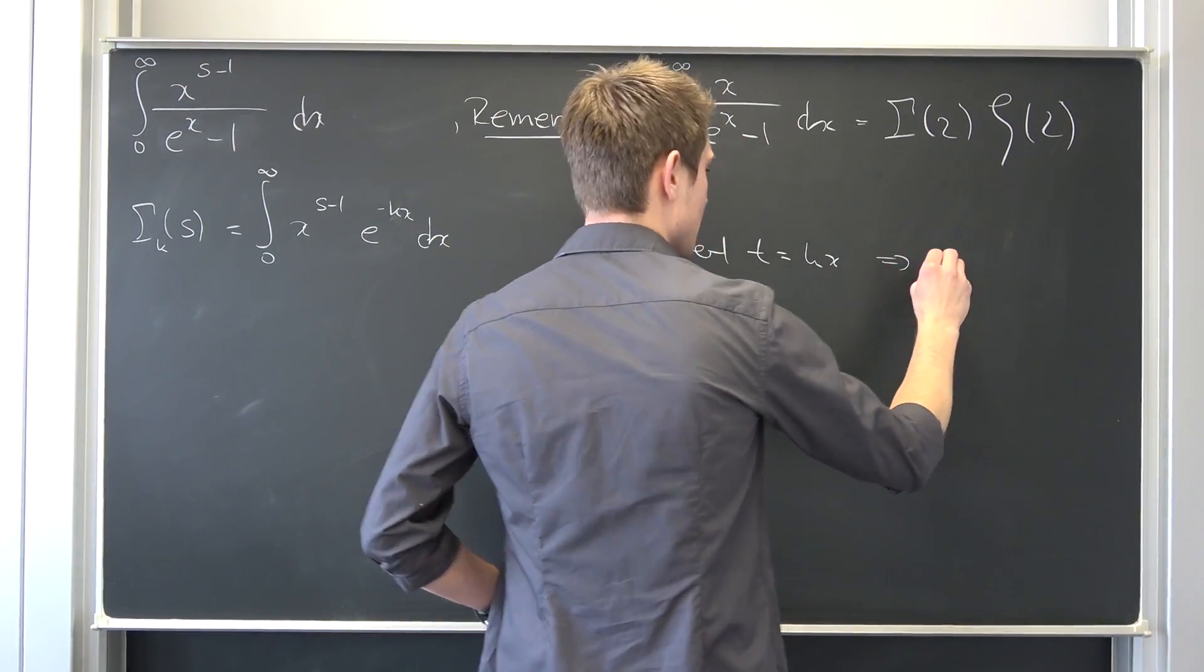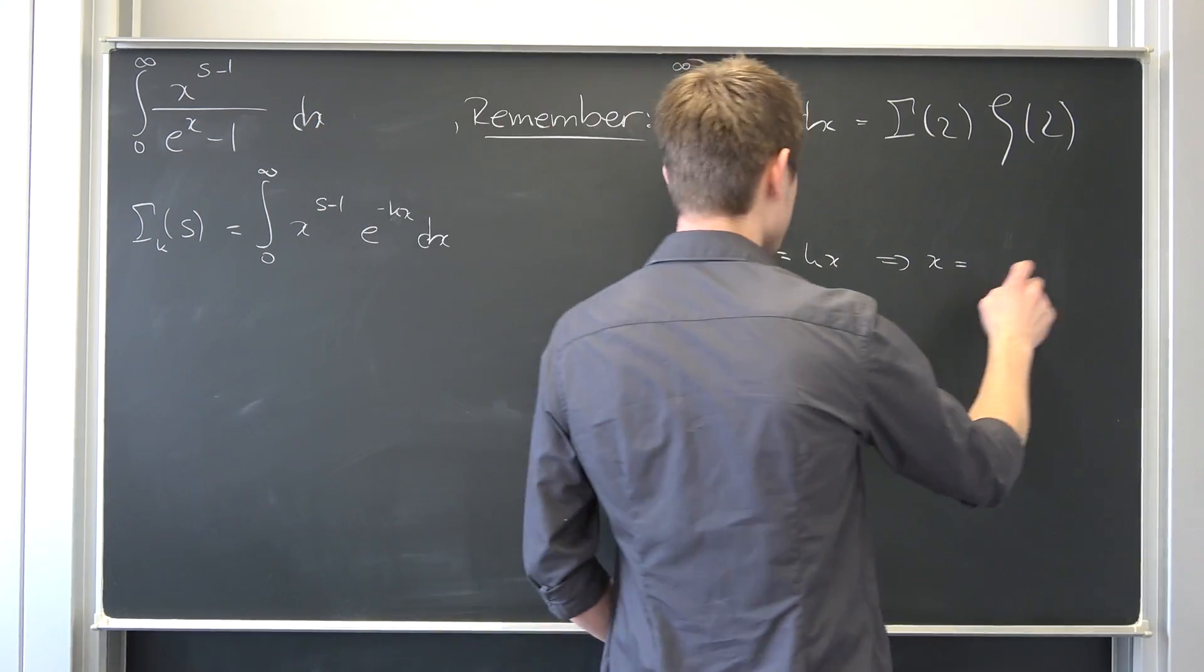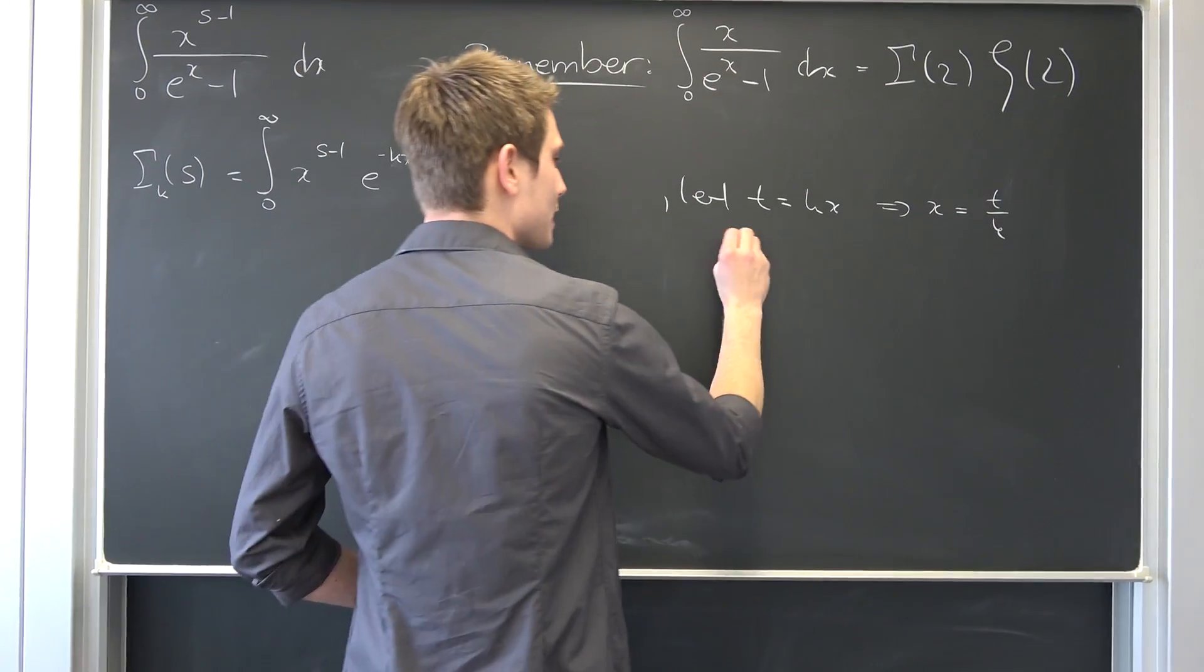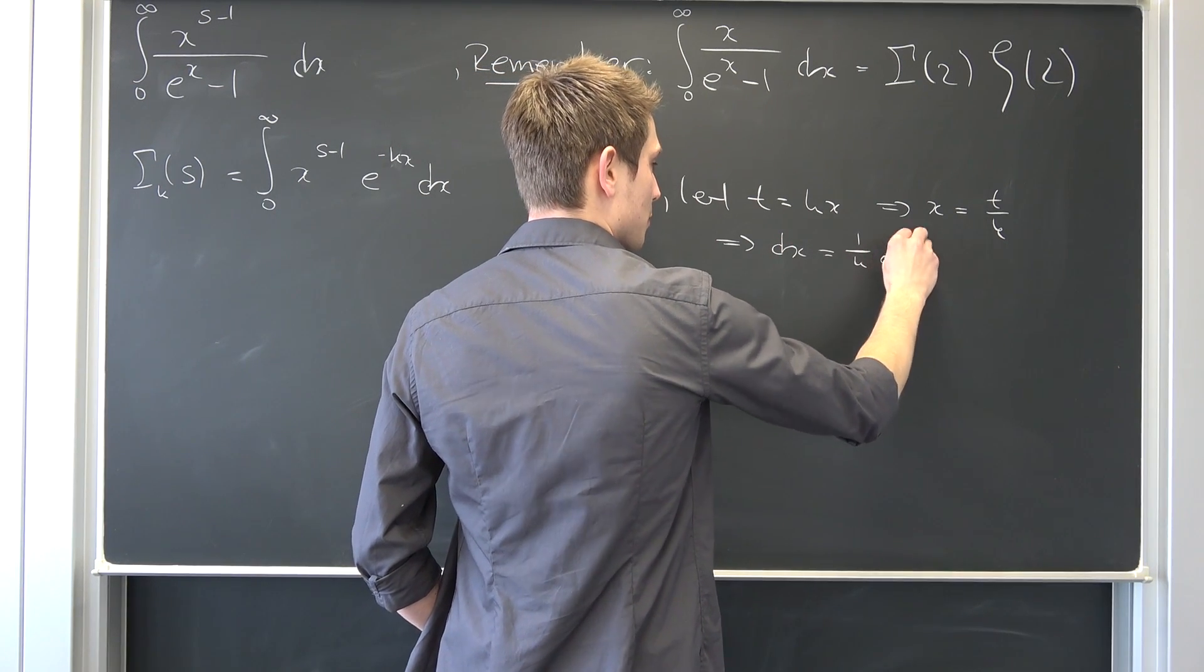Meaning we are going to get that, well, x is nothing but if our k is not equal to 0, we don't want that! x is then t over k and we can differentiate both sides to get that dx is nothing but, well, 1 over k times dt.